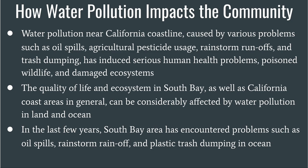Water pollution near the California coastline is caused by various problems such as oil spills, agricultural pesticide usage, rainstorm run-offs, and trash dumping, and has induced serious human health problems, poisoned wildlife, and damaged ecosystems. The quality of life and ecosystem in the South Bay, as well as the California coast areas in general, can be considerably affected by water pollution on land and in the ocean.